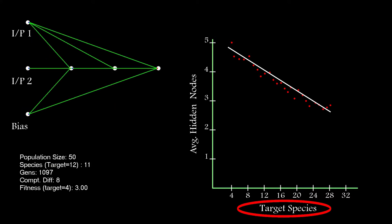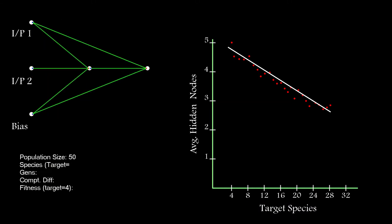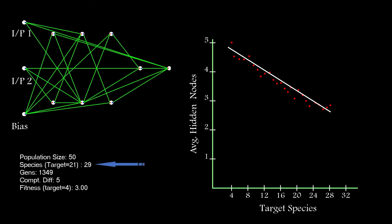Now I say species target here because it's just that: a target. The actual number of species will tend to bounce around that number. If it's too high, the compatibility threshold will increase to drive the number down, and if it's too low, then it'll decrease to force the number up. You can see that in action here for each generation.